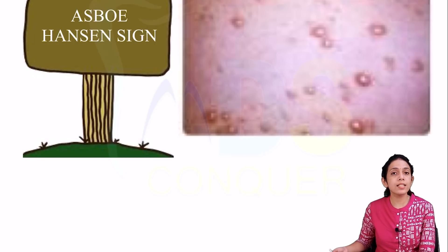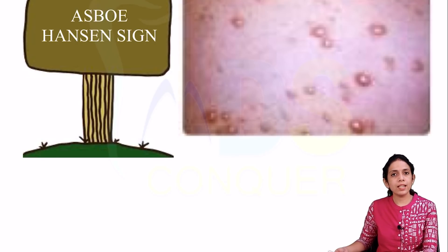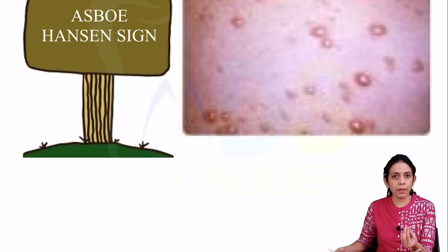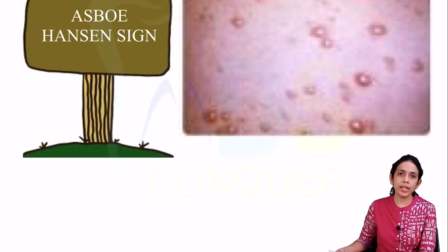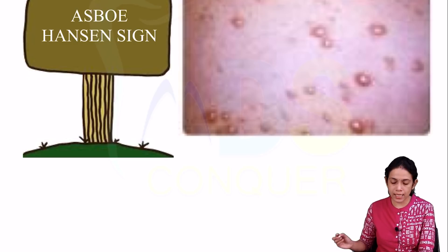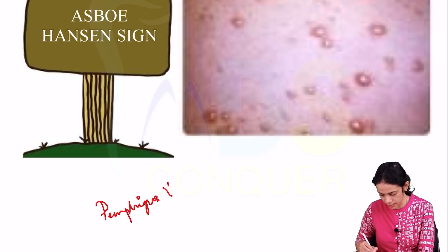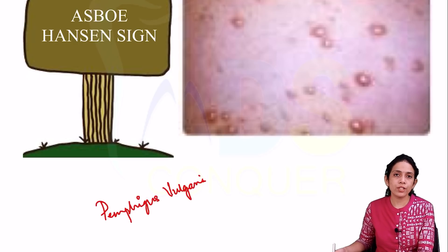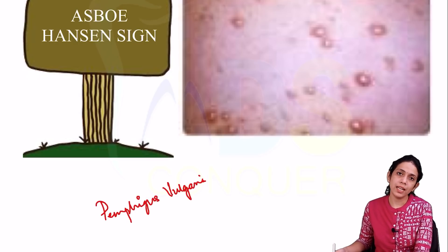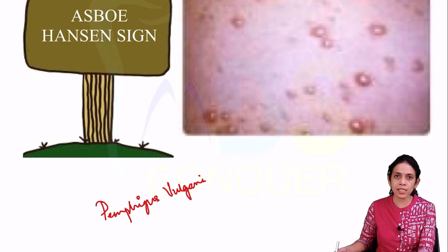The first sign is the Asboe-Hansen sign. When there is a bulla and pressure is applied on it, the bulla will spread laterally. It is also called the bulla spread phenomenon and is seen with pemphigus vulgaris.